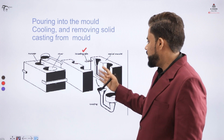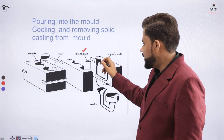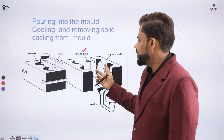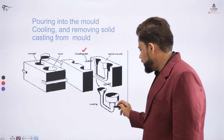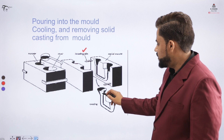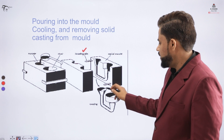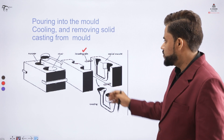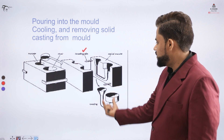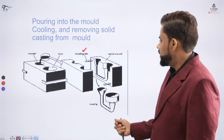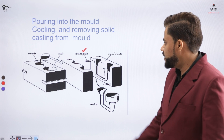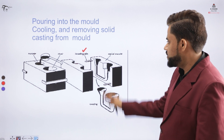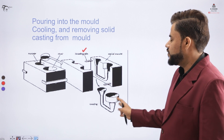After the metal is poured, we wait for cooling. Then we open the flask and separate both ends by unlocking the pin. The hollow cavity filled with metal is now converted into a casted metal part. The casting comes out with the runner and riser also solidified. This is the removal of the solid casting from the mold; the sand mold can then be broken and used for the next operation.